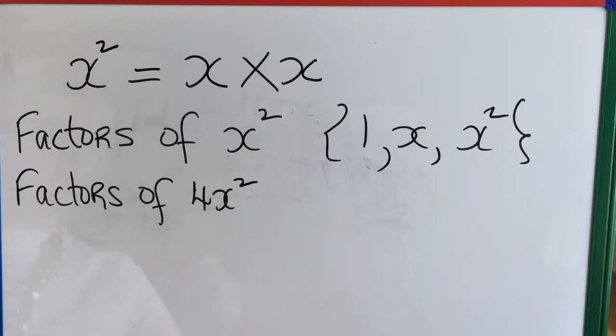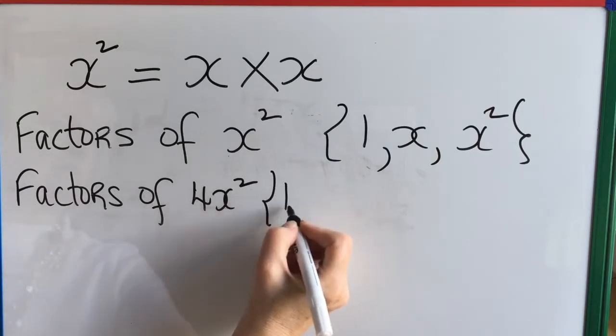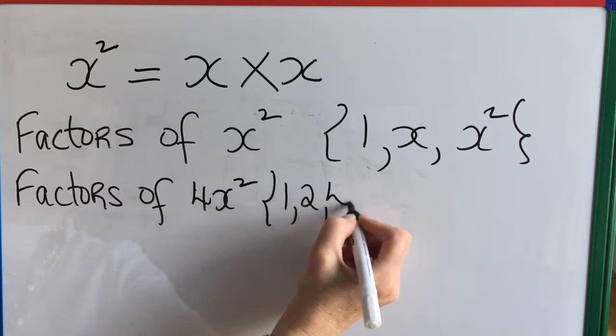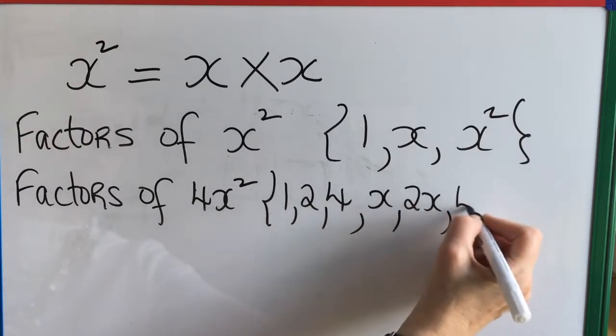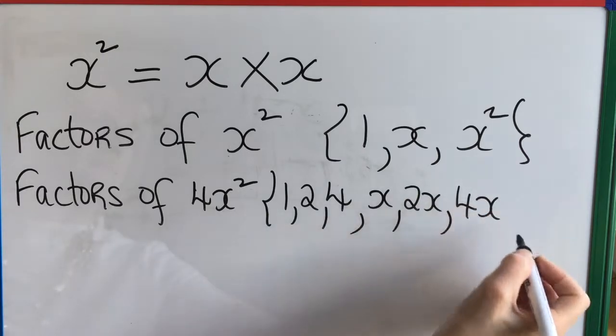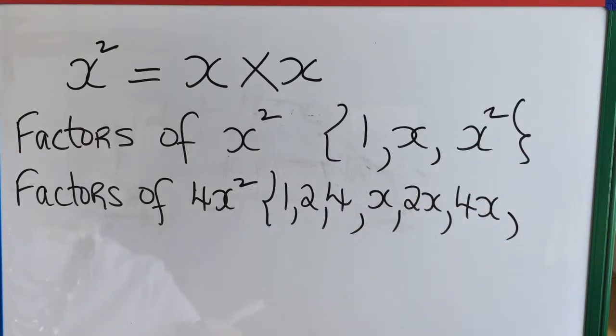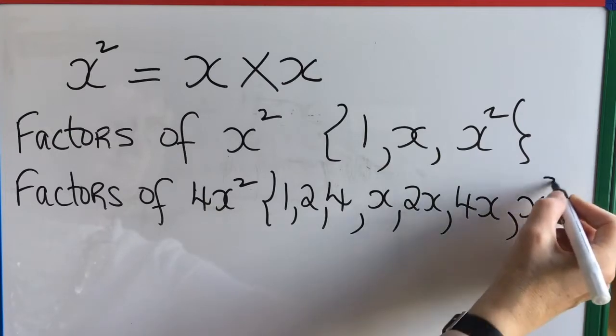Now the factors of 4x squared would be 1 and 2 and 4, all the factors of 4, and now x and 2x and 4x, and finally 1x squared, 2x squared and 4x squared.